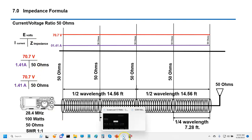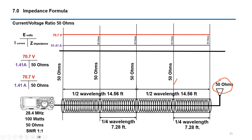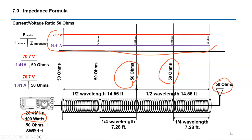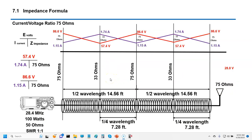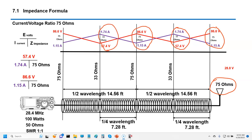With a balanced 50-ohm feed line, at each interval we have 50 ohms all the way across to the radio, so the voltage-to-current relationship stays the same — 70 volts at 1.41 amps throughout. With 75 ohms at the antenna, the transformation changes things: at the antenna we have 86 volts at 1.15 amps, and at the quarter wave point we have 57 volts at 1.74 amps. This pattern repeats alternating between half wave and quarter wave points.